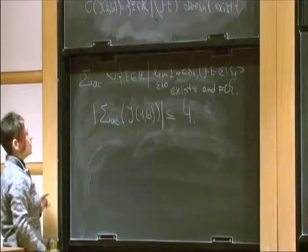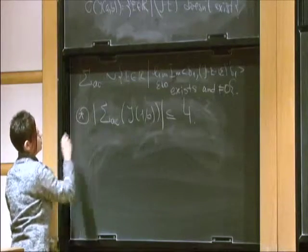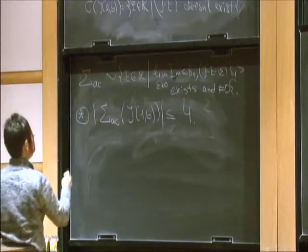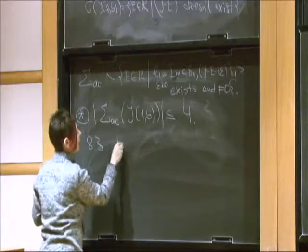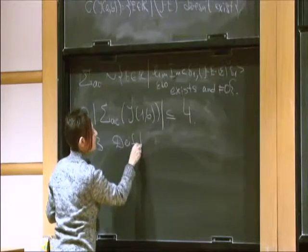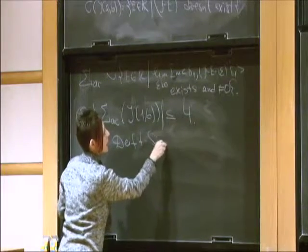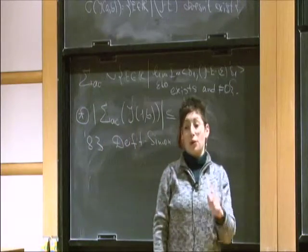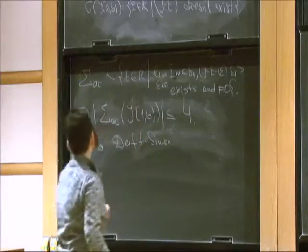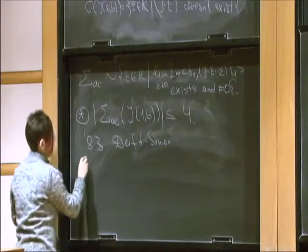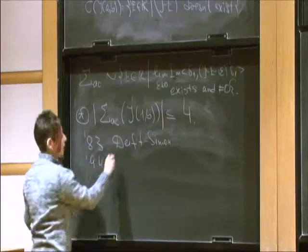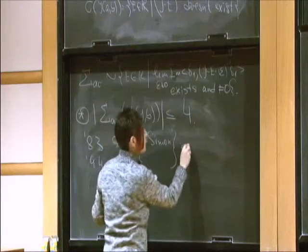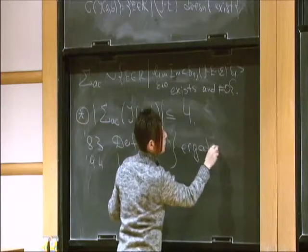The proof of this inequality, which I will denote by star and refer to several times, was first proved in 1983 by Dyft and Simon, but only under the assumption that the operator is ergodic. Another proof came in 1994 by Last, again only for the ergodic case.